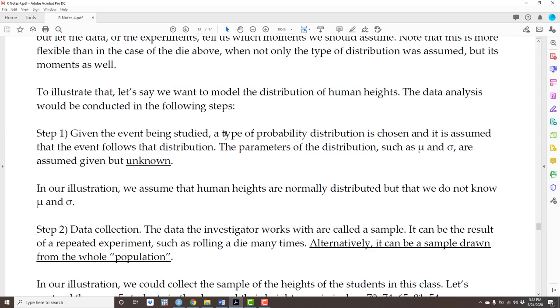Given the event being studied, a type of probability distribution is chosen, and it is assumed that the event follows that distribution. If we are talking about human height, it is useful to assume that the human height follows a normal distribution with expected value μ and standard deviation σ unknown.